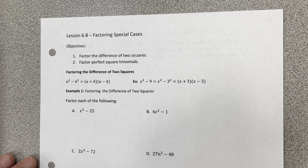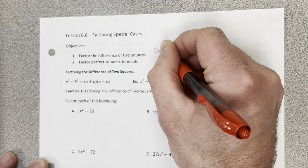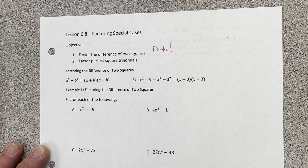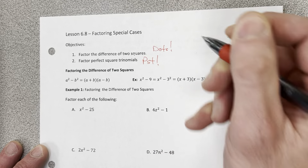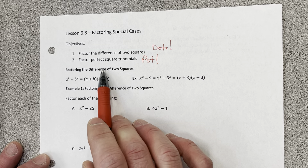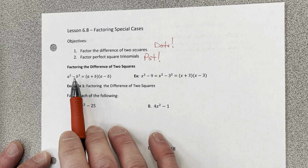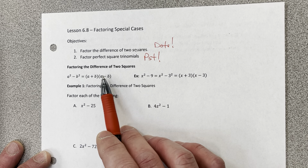I remember these with some acronyms. For difference of two squares I think of DOTS, and you'll often see me write DOTS next to a problem before I use that pattern. For a perfect square trinomial I write PST next to a problem before I use that pattern. The difference of two squares pattern says: if you have a perfect square minus a perfect square, it always splits into what are called conjugates.